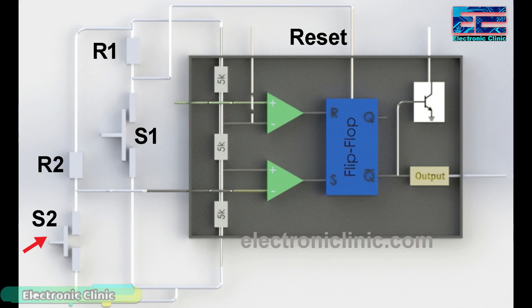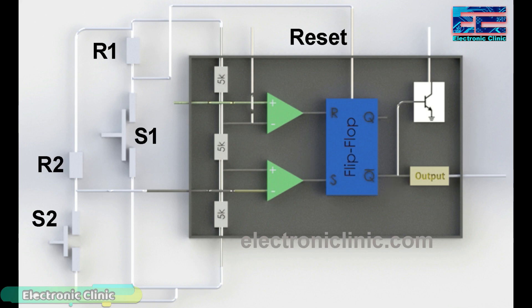Now let's consider that switch S2 is pressed. This will pull the inverting input of the comparator to ground, due to which the voltage on the non-inverting input is greater than the inverting input. The comparator generates 1 at the output, which is given as input to the S-pin of the flip-flop, then Q-bar outputs 0 and the timer output becomes high. This output will remain high until we press switch S1. Now after covering the basics, it's time to make some basic, intermediate, and advanced level projects using the 555 timer IC.